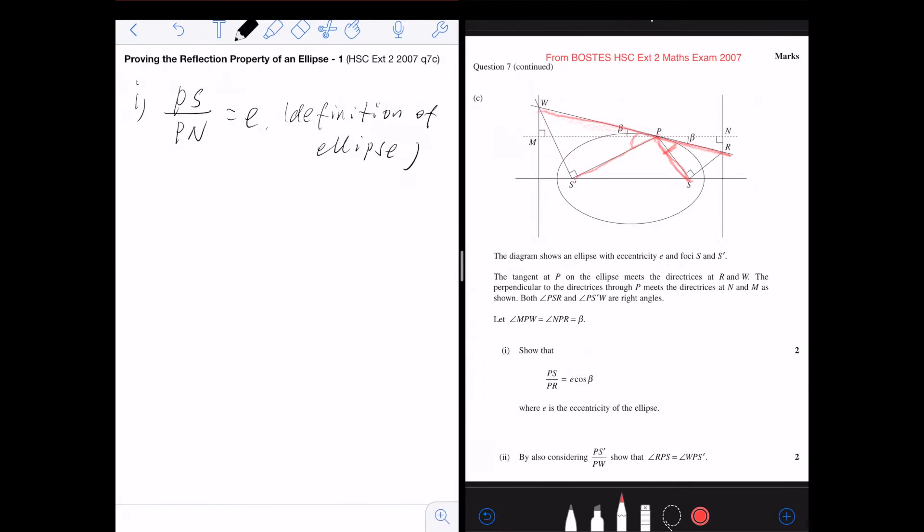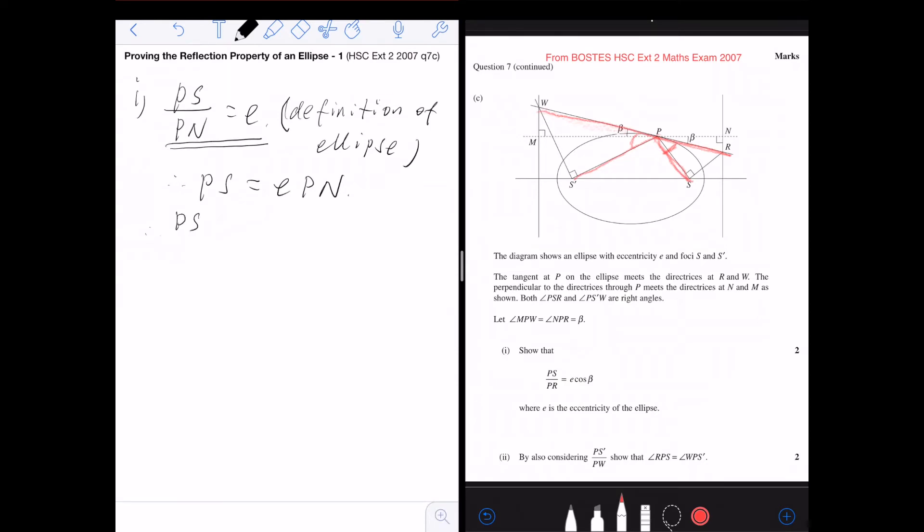That's by the definition of the ellipse. Everyone knows this. That's the definition. And by using this, we can change to PS is actually equal to e PN. Therefore, PS over PR is equal to e PN over PR.